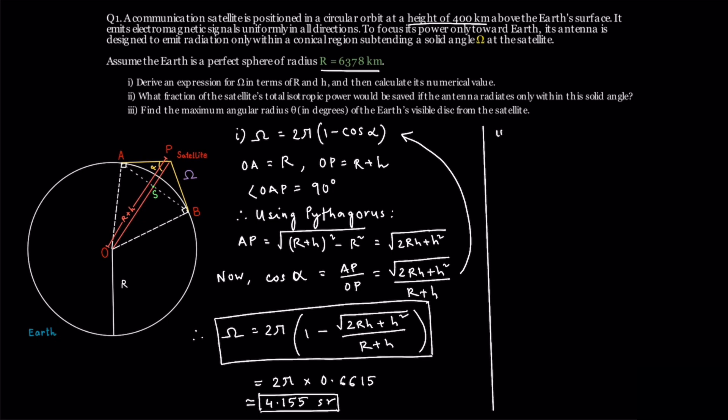Let's now move to part 2. An isotropic antenna would radiate uniformly in all directions and that's basically a full solid angle of 4 pi steridians. But here, the satellite is radiating only in this cone which means only 4.155 out of 4 pi steridians are being used. That's roughly one third of the space or in percentage that's 33%. So by narrowing the radiation around 67% of the total emitted power is being saved.